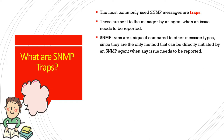SNMP traps are the most commonly used SNMP messages and are sent by agent devices to the manager whenever anything needs to be reported. They are unique because they are directly initiated by the SNMP agent whenever any issue needs to be reported, rather than being triggered by a manager's request.